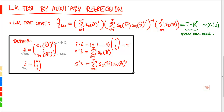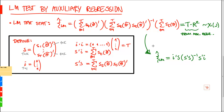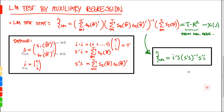So given these definitions, we can show that the LM test statistic ψ̂_LM can be rewritten as i'S (S'S)⁻¹ S'i. Once we know S we can easily compute the test statistic, and we want to show that we can do this by running an auxiliary regression.